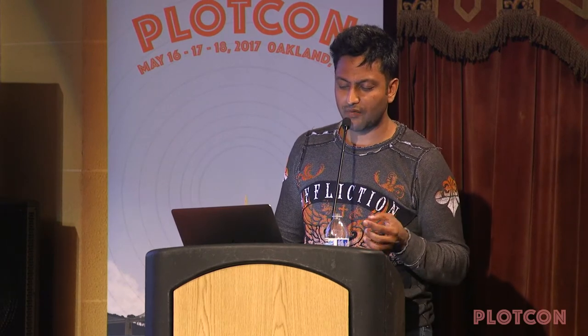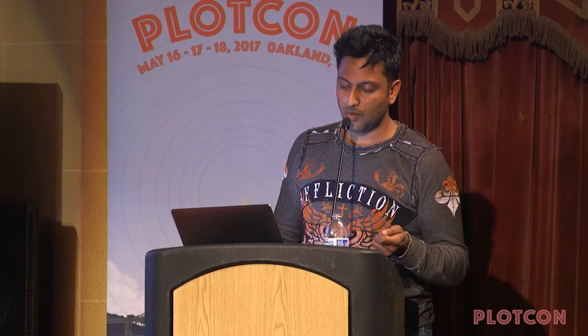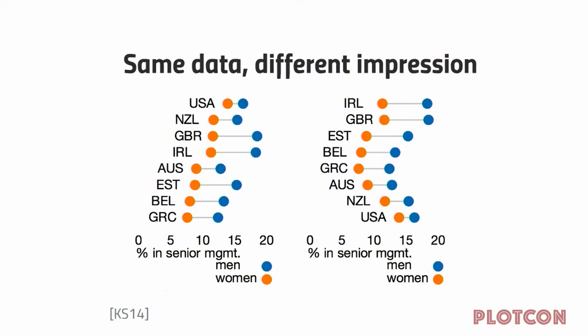The purpose of this graphic is to show the difference in genders in senior management — orange is the percentage of women, blue is the percentage of men. The real crime of this visualization is that it shows the same data, but because of an arbitrary decision made by the designer, you will draw entirely different conclusions. When the shape of the data changes, the shape of the understanding you derive changes.